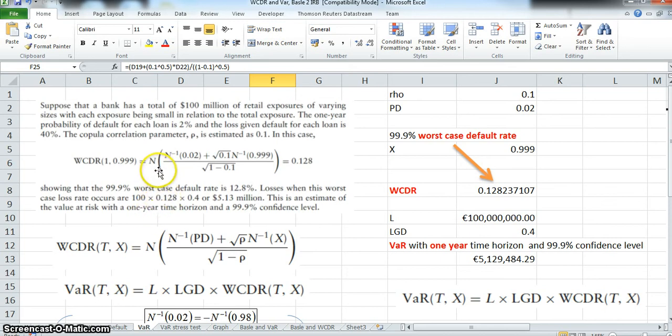Let's take the following example from chapter 11 of Risk Management and Financial Institutions by Hull, example 11.2. He wants to estimate the Value at Risk of a loan book using a Gaussian copula, which in this case means worst-case default rate. Suppose that a bank has a total of 100 million of retail exposures of varying sizes, with each exposure being small in relation to the total exposure. The one-year probability of default for each loan is 2%, and the loss given default for each loan is 40%. The copula correlation is estimated as 0.1.